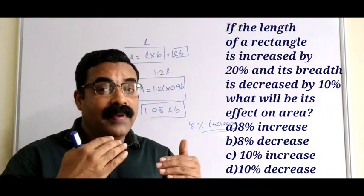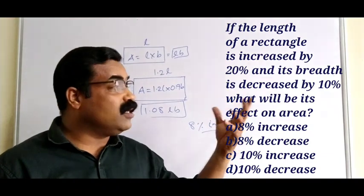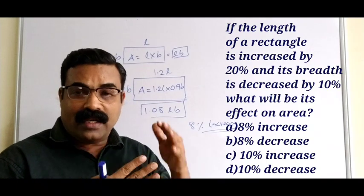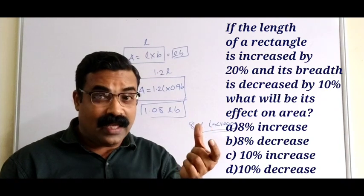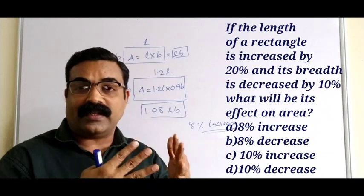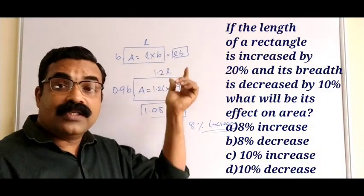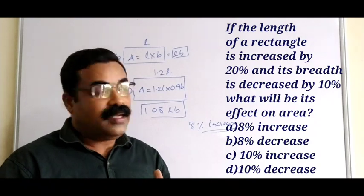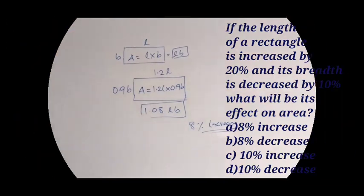These types of questions are very common — they may ask about increasing or decreasing the length or breadth. It is all about relative comparison. The formula for the area of a rectangle is L × B. When you increase or decrease the dimensions, compare the new area with the original area to find the percentage increase or decrease. Mark the correct option accordingly.